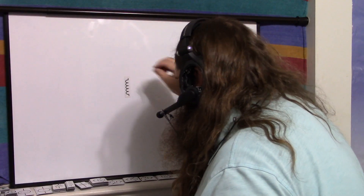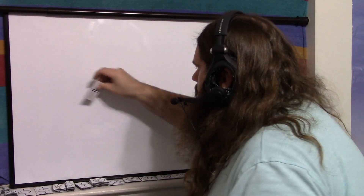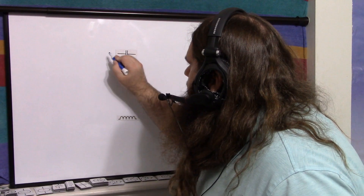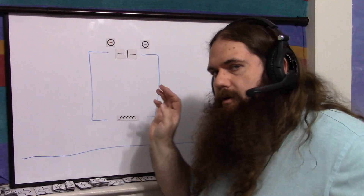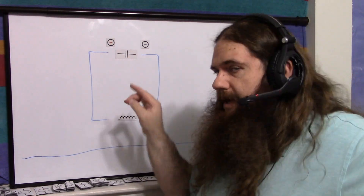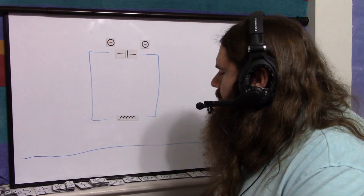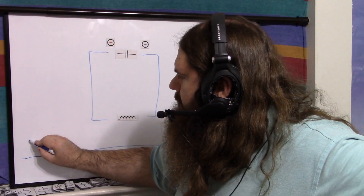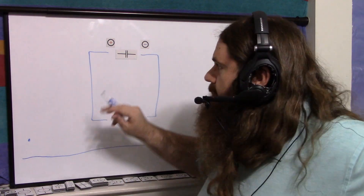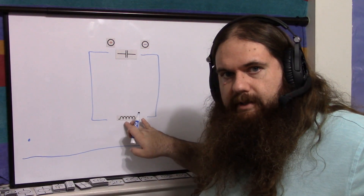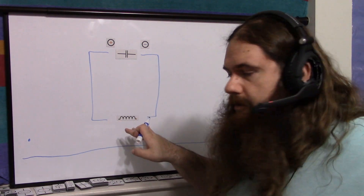Let me set aside the resistor for a moment and walk through how this circuit produces an oscillation. We begin with the capacitor fully charged to some positive voltage and no current flowing. The inductor is completely discharged — no current means no inductor charge. So the capacitor begins to discharge through the inductor, and the sine wave begins here at a positive peak.